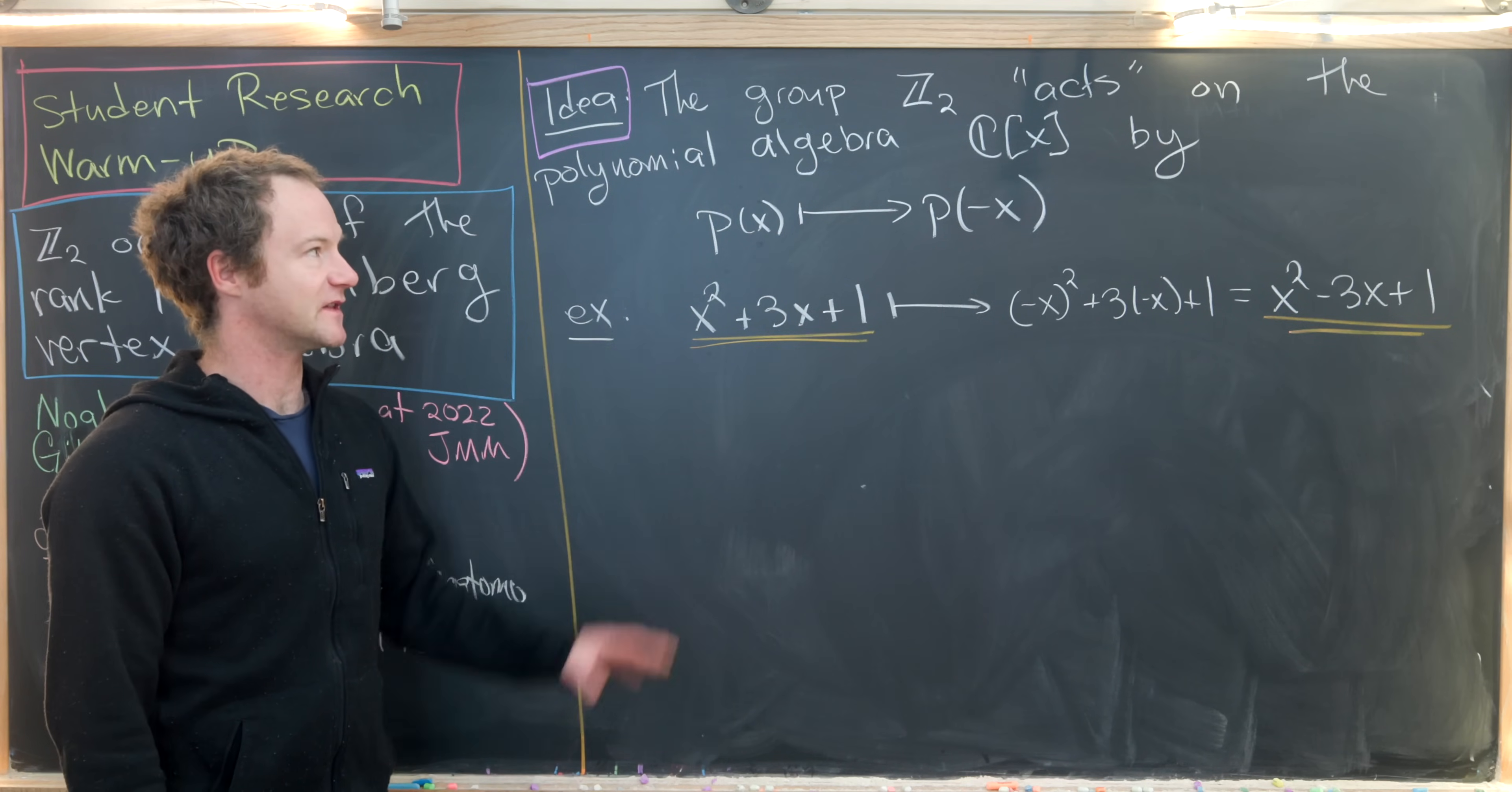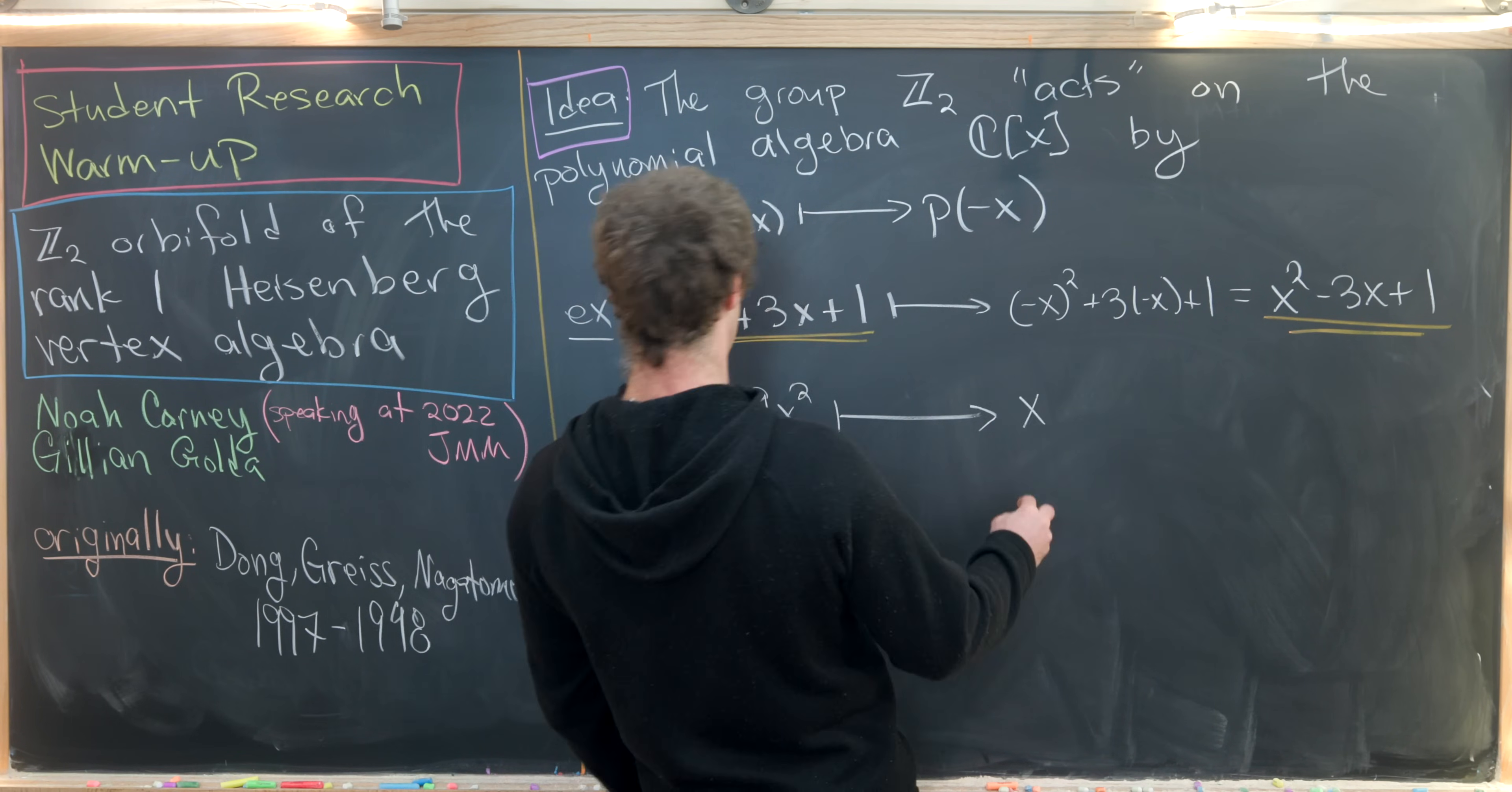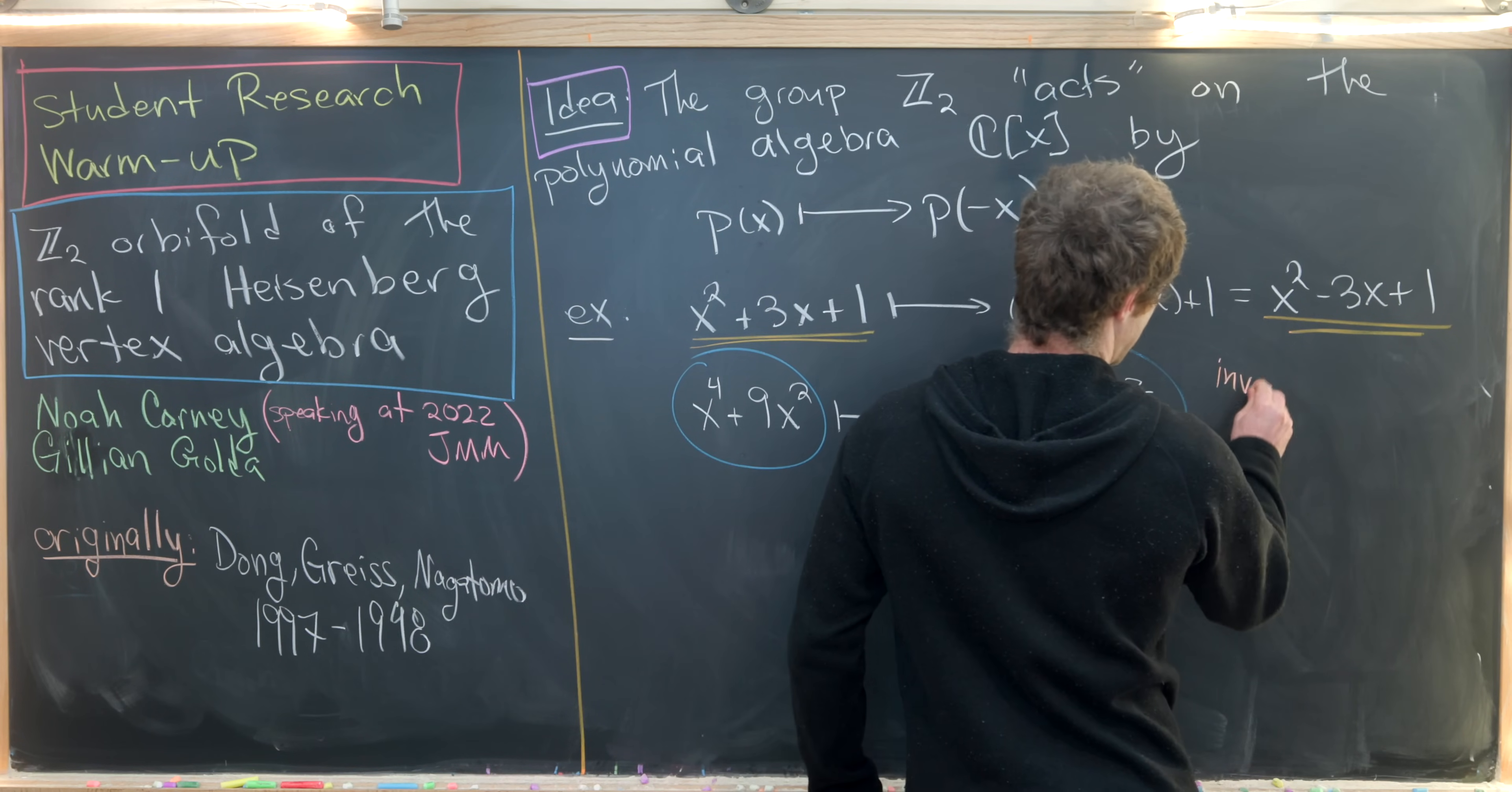So we would say that this polynomial is not invariant under this Z2 action. Now let's compare that to the polynomial X to the fourth plus 9X squared. If we replace all of the X's with minus X here, we end up with the same polynomial because the minus signs square out to positive signs.